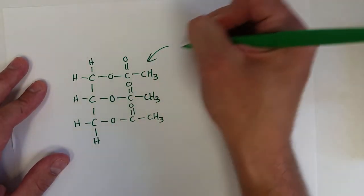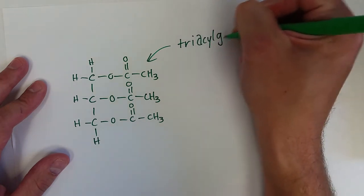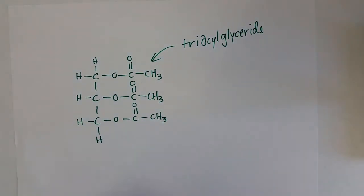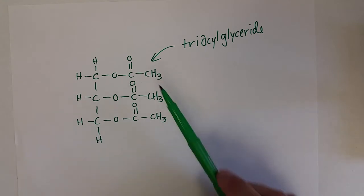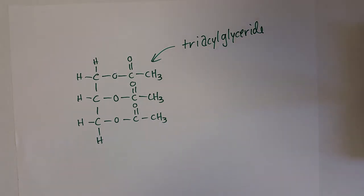That's a triacylglyceride. It doesn't have to be formed with the same three fatty acids as I showed in this case. They can be produced with a mixture of one, two, or three different fatty acids. The composition of the fatty acids on that triacylglyceride is what's going to distinguish a fat from an oil, primarily. Or more importantly, the physical properties of those triacylglycerides is what's going to distinguish the lipids as a fat or an oil.